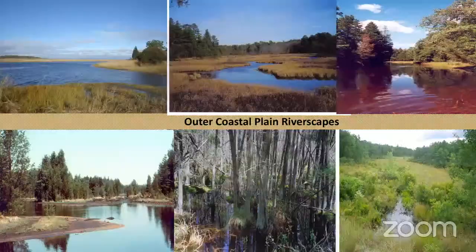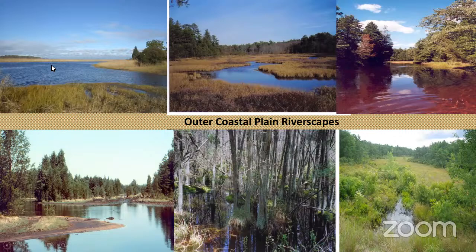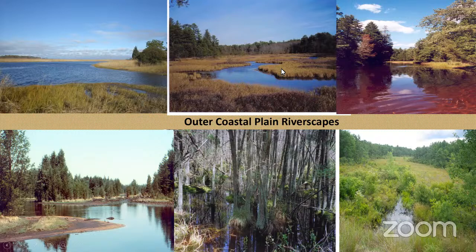Outer coastal plain streams look very, very different. First of all, they're blue — they're not muddy. And at some times in the summertime, they're even red because of bog iron dissolved in the water. You don't get any steepness in the banks at all — this is all very flat terrain. Even in the middle part, flat terrain in the cedar bogs, and even at their sources, there are large swampy areas going to the river. This looks quite different from the intercoastal plain streams.